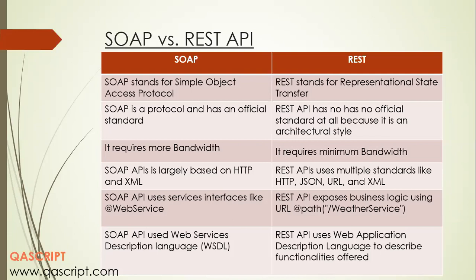So we have looked at what is an API, the different types of APIs, the most popular ones, what is a web services API, what is REST API, how an API can be RESTful, and the differences between SOAP and REST API. Now we'll be entering into the Postman tool — we'll see how to set it up, what are the different features, and how we can test our REST APIs on the Postman tool. Join me in the next video where we'll talk more about Postman.